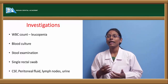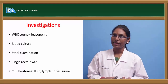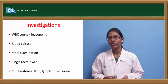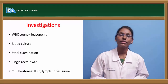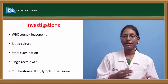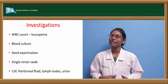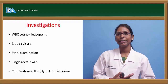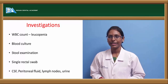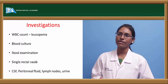Culture of the bacilli can also be done using a single rectal swab or by identifying them in CSF, peritoneal fluid, lymph nodes, and urine — although in urine the bacilli are less predominantly seen compared to fecal material. If the bacilli are present in the CSF, it denotes typhoidal meningitis.